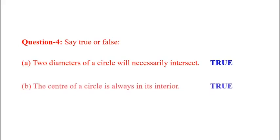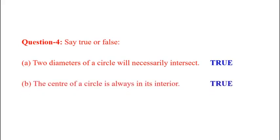Question number 4. Say true or false? First, two diameters of a circle will necessarily intersect. This is true. Any two diameters of a circle, they will intersect each other. Then, the center of a circle is always in its interior. It is also true.